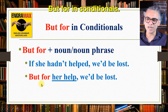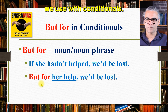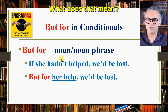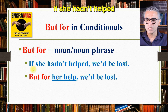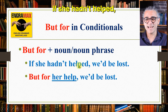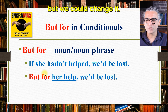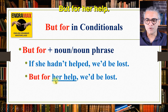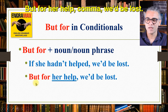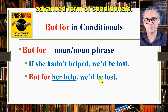'But for' is another fixed phrase we use with conditionals. Remember that it always follows with a noun or noun phrase — not a clause. Example: if she hadn't helped, we'd be lost — that's a mixed conditional. We could change it to: but for her help, we'd be lost. 'Her help' is a noun phrase. This is a very common advanced form of conditionals.